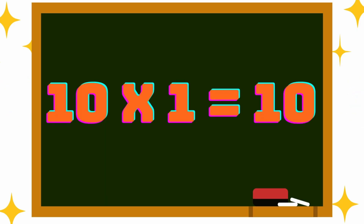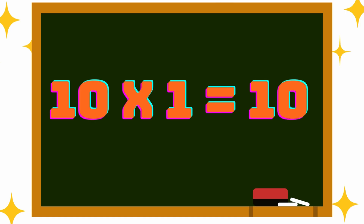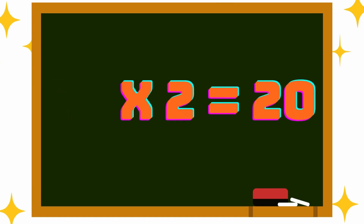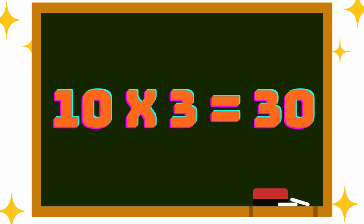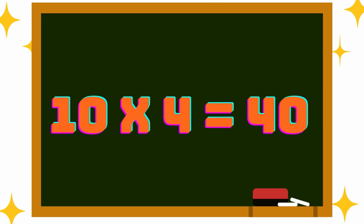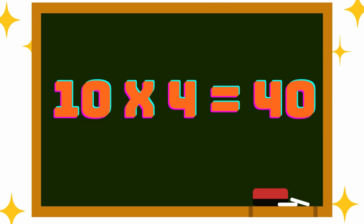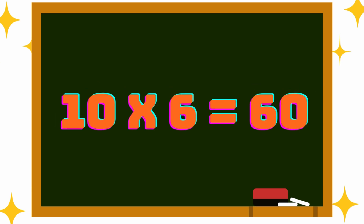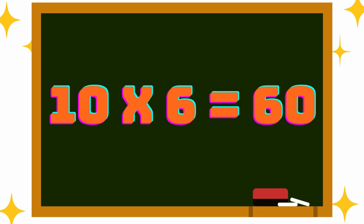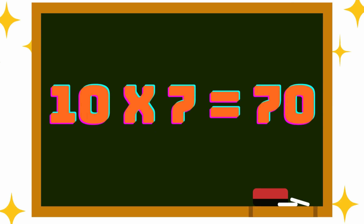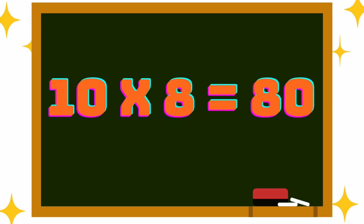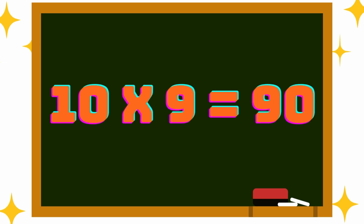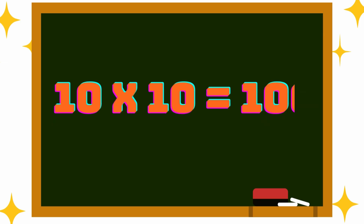10 ones are 10. 10 twos are 20. 10 threes are 30. 10 fours are 40. 10 fives are 50. 10 sixes are 60. 10 sevens are 70. 10 eights are 80. 10 nines are 90. 10 tens are 100.